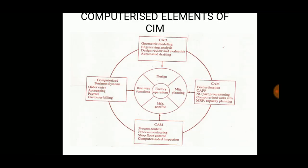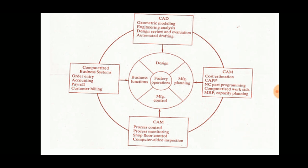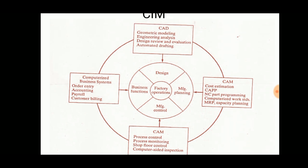What are the elements of CIM? First, business functions — these consist of order entry, accounting, payroll, and customer billing. Then the design process, which is CAD, includes geometric modeling of the product, analysis of the product, design review and evaluation, and automated drafting.